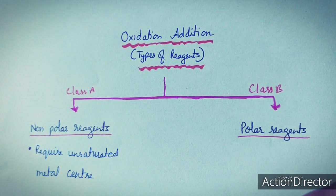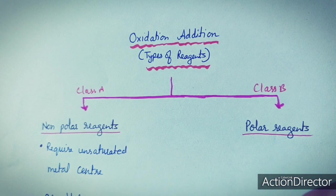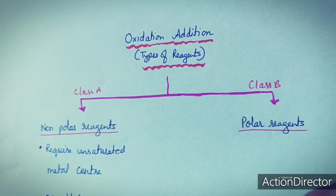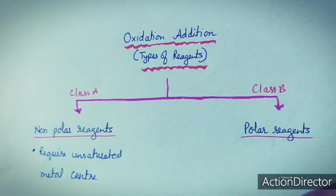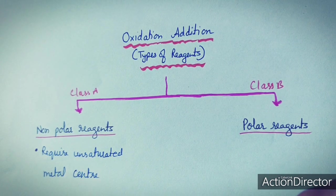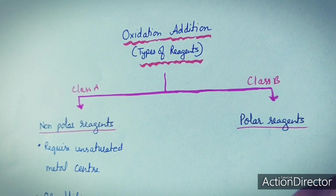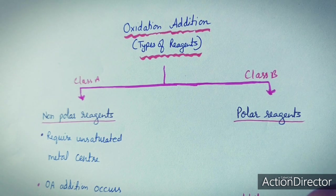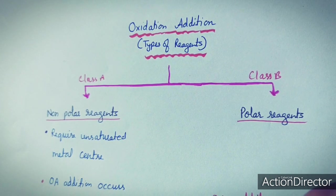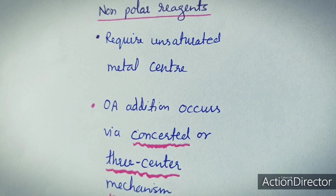There are two types of reagents in oxidative addition reactions: nonpolar reagents and polar reagents. Nonpolar reagents include H₂, O₂, molecules having C-H bonds, and molecules having C-C bonds. Polar reagents are those which have polar bonds — they may be alkyl halides, aryl halides, or acids.